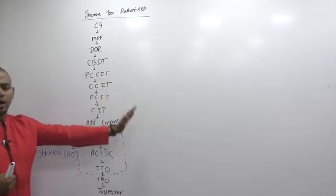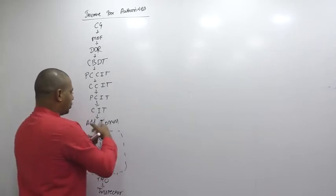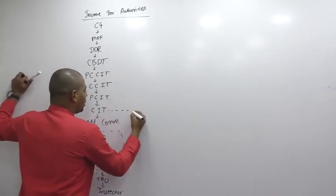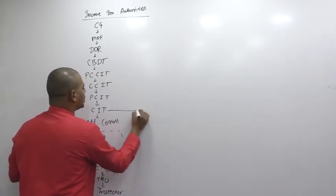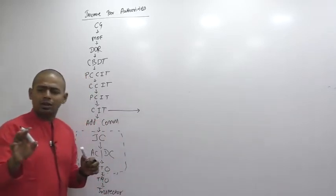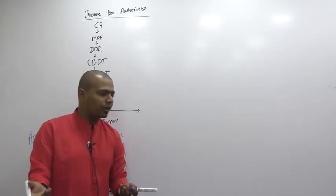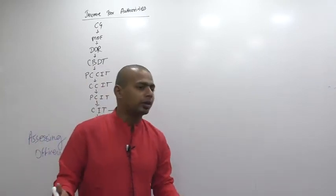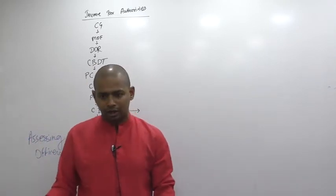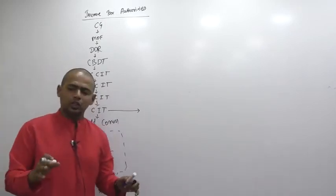Then there is a separate authority. CIT ke baaju mein na, aise arrow jayega. Don't you think that sometime income tax department may do wrong things with assessee, because department is corrupt to some extent. Corruption is always there. You cannot avoid corruption, you cannot ignore corruption. We as the people, we should talk about corruption also. Corruption is there in the country, yes or no? Alright, so because of corruption, because of some other issue,